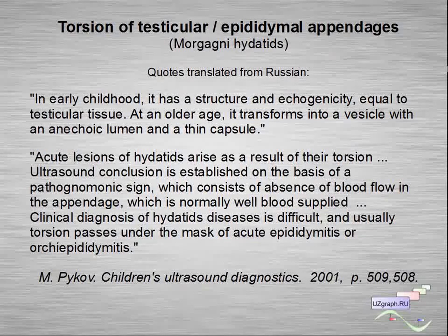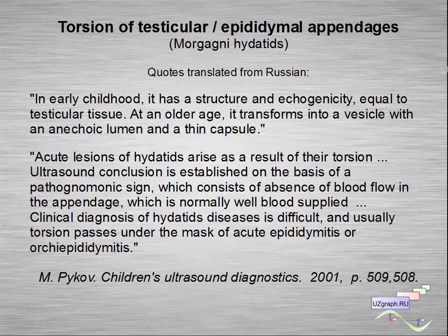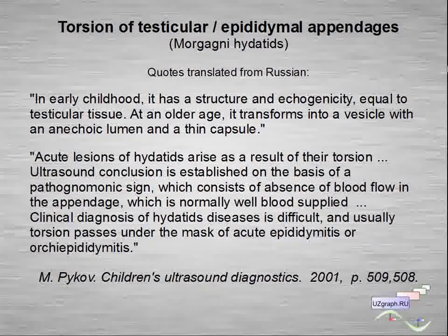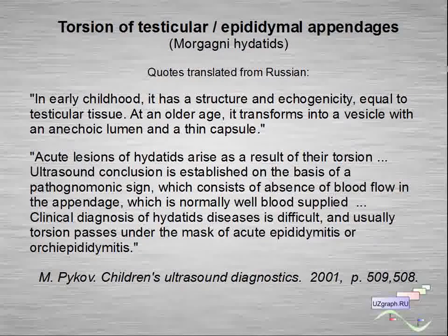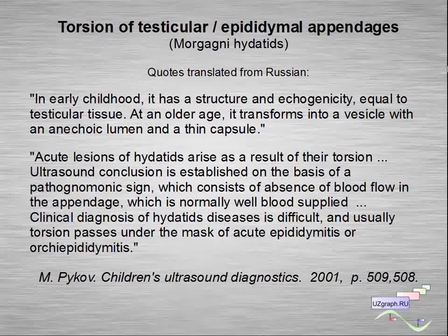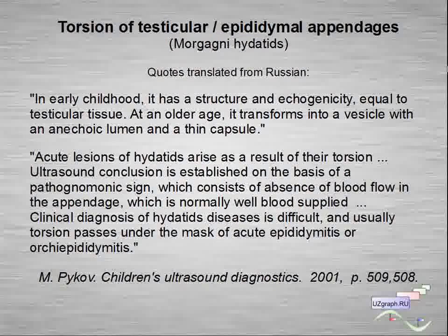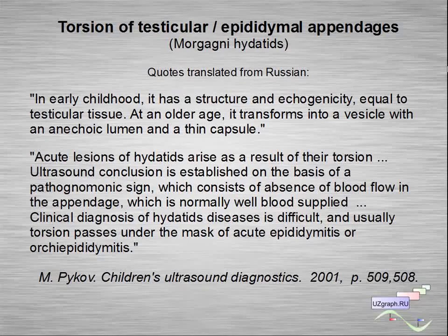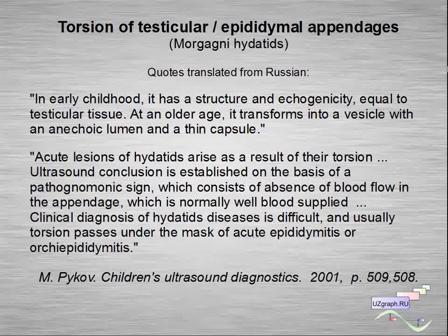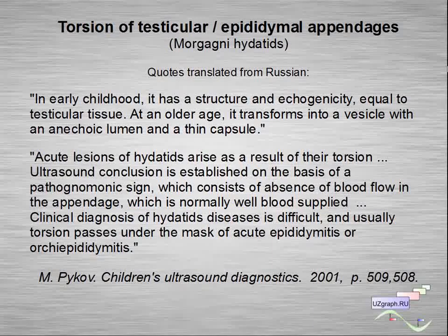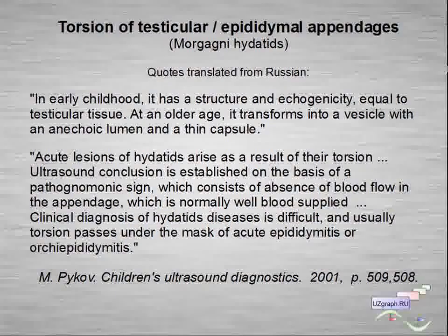From a Russian textbook edited by Picov on ultrasound diagnostics: in early childhood, the testicular appendage has a solid structure applicable to testicular tissue. At an older age it transforms into a vesicle with an anechoic lumen and thin capsule. Acute lesions of hydatids arise as a result of torsion. The ultrasound conclusion is established on the basis of a pathognomonic sign, which consists of absence of blood flow in the appendage, which is normally well blood-supplied. Clinical diagnosis of hydatid disease is difficult, and torsion usually passes under the mask of epididymitis or orchido-epididymitis.